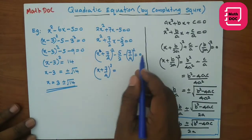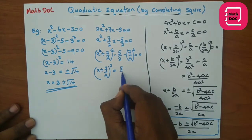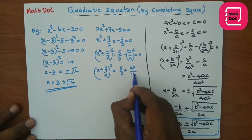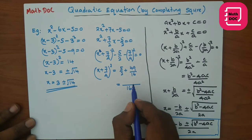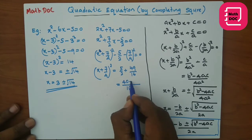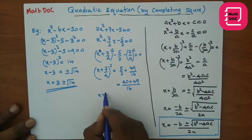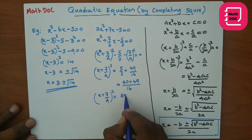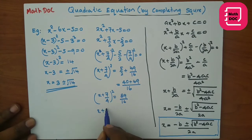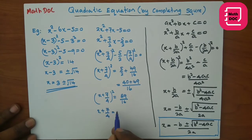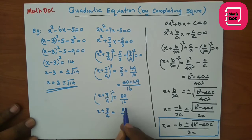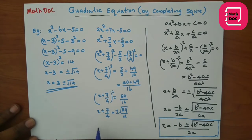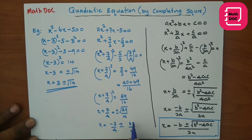Put the constant terms on the other side: 5/2 + 49/16. The common denominator is 16, giving 40 + 49. Then (x + 7/4)² = 89/16. Taking square roots on both sides: x + 7/4 = ±√(89)/4. Therefore x = -7/4 ± √89/4. Those are the solutions.